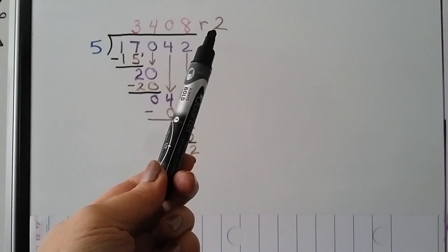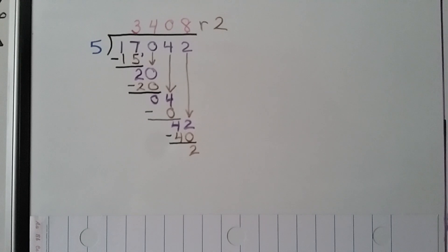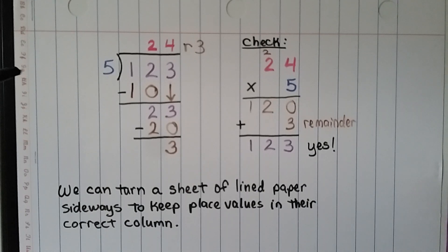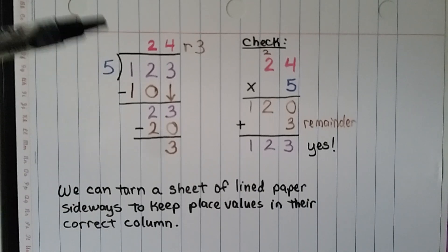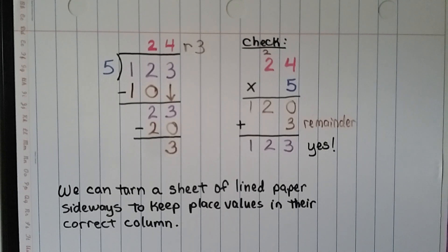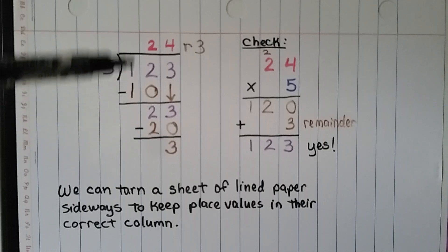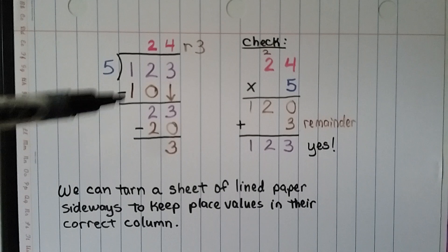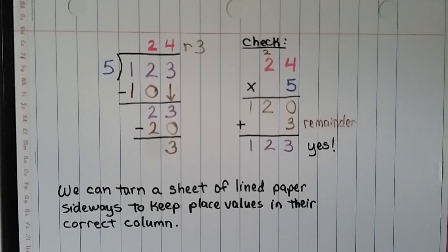We can write the remainder next to the quotient. Also, we can turn a sheet of lined paper sideways to keep place values in their correct columns — you can use it for addition, subtraction, division, or multiplication. It helps keep numbers in the right columns so we won't make as many mistakes.